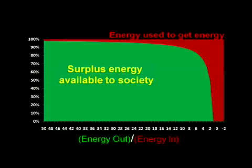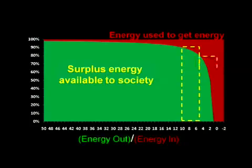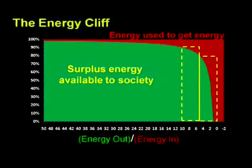Even at a net energy ratio of only 15, the surplus energy available to society remains quite high. This surplus energy, of course, is what supports all of our economic growth, our technological progress, and our wonderfully rich and complicated society. I want to draw your attention to what happens between the readings of 10 and 5 on this chart. The net energy available to society begins to drop off in a manner that should be familiar after seeing the section on exponential charts — only this hockey stick points down. Below a reading of 5, the chart heads down in earnest, hitting 0 when it gets to a reading of 1. When it takes 1 unit of energy to get a unit of energy, there is 0 surplus, and there's really no point in going through the trouble of getting it. Below a reading of 5, we are on the energy cliff.